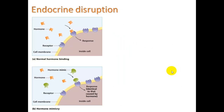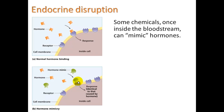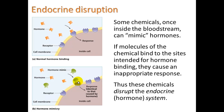So what's the deal with endocrine disruption? Cells have receptors in the cell wall. When a hormone molecule matches up with a receptor — like a lock and a key — the cell produces a response. If you have a hormone mimic, a pollutant with just the right shape, it can act as that key and cause the same response. That's the mechanism of endocrine disruption.